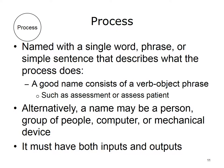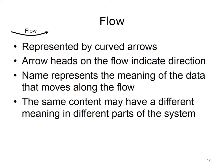A process should be named or described with a single word, phrase, or simple sentence that describes what the process does. A good name consists of a verb-object phrase, such as 'assessment' or 'assess patient.' In some cases, the process will contain the name of a person, group of people, computer, or mechanical device — describing who or what is carrying out the process rather than what the process is. The process flow is represented by curved arrows. Arrowheads on the flow indicate the direction of data movement, i.e., whether data are moving into or out of a process, or both. The name of the flow represents the meaning of the data that moves along it. Importantly, the same content may have a different meaning in different parts of the system — for example, an address as given by a patient versus an address that has been matched and validated.